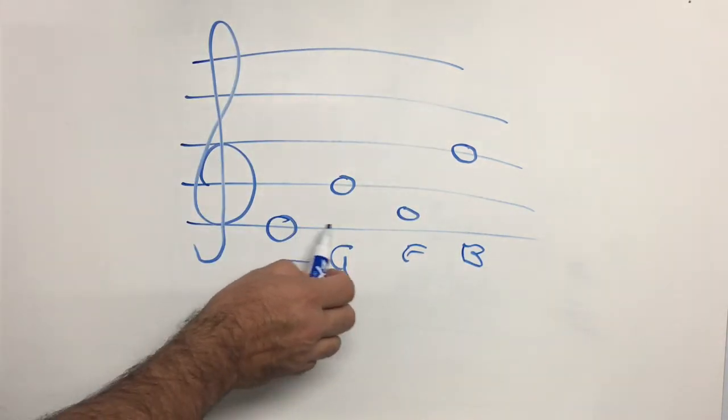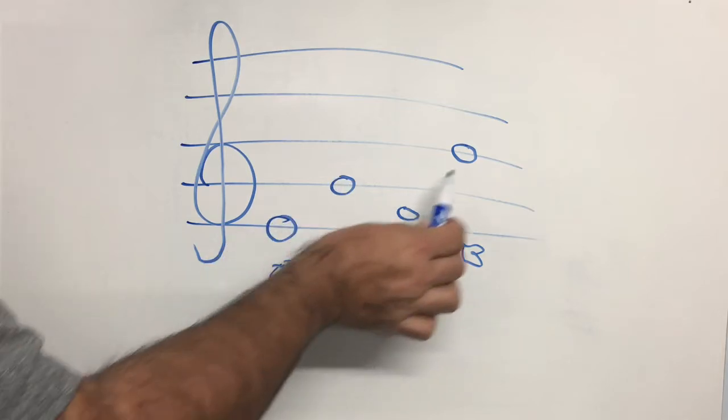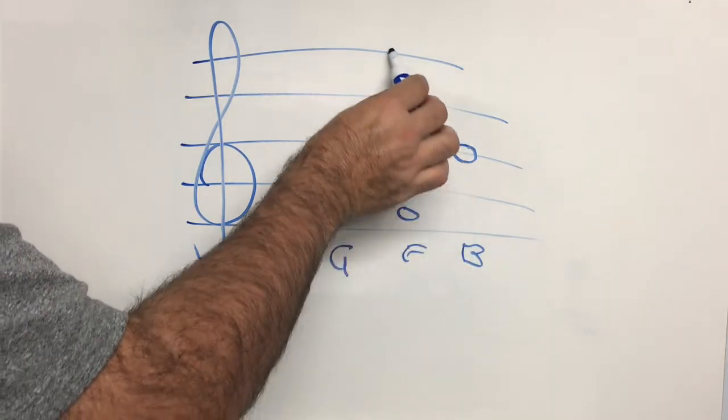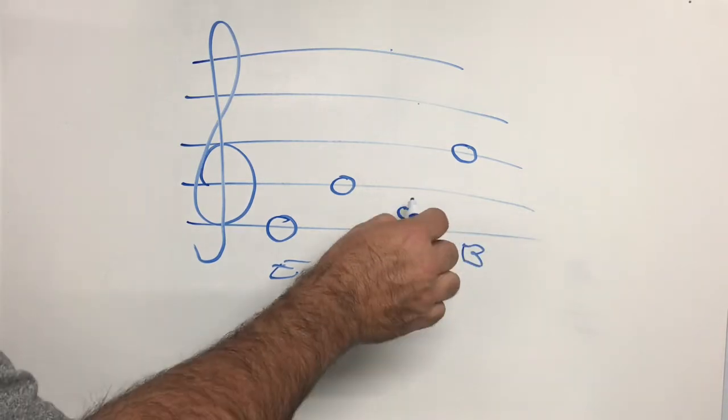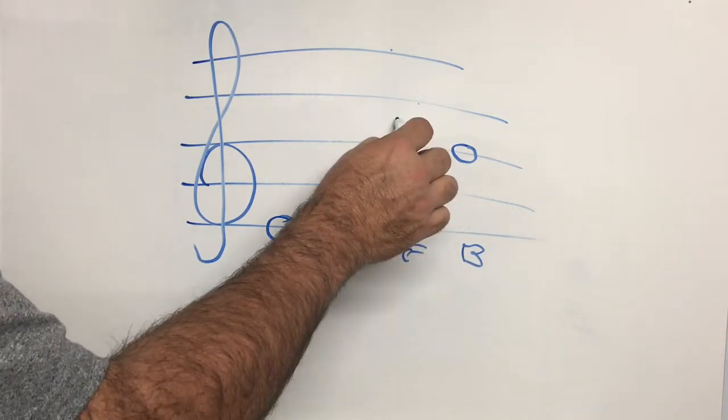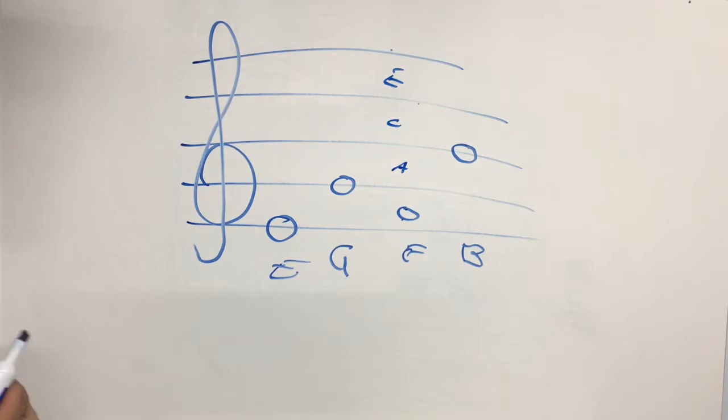Remember, every, second line, G. Good boy deserves fruit. And the first space is F. And if you're remembering the rhyme, F, A, C, E spells the word face.